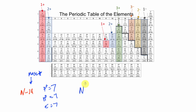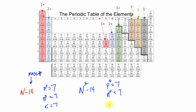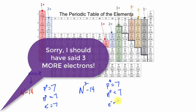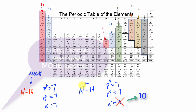Now let's look at nitrogen-14 with a minus three charge — an ion of nitrogen. The protons are still 7 because it's still nitrogen, and the neutrons are still 7 because the mass number is still 14. But since there's a minus three charge, I'm going to have three more electrons — so electrons equal 10. The periodic table does not give you the mass number, so anytime you're doing this, you have to be given the mass number or know the number of neutrons.